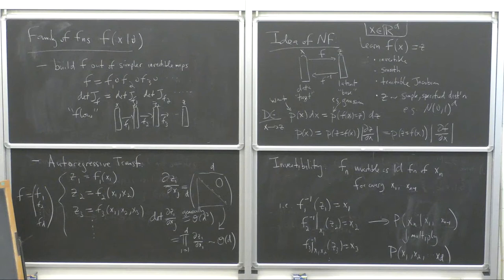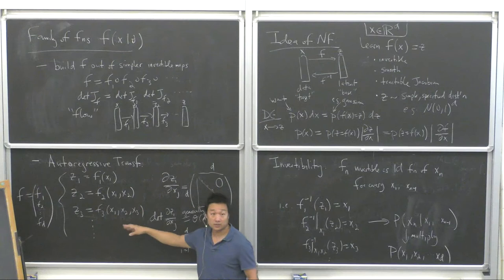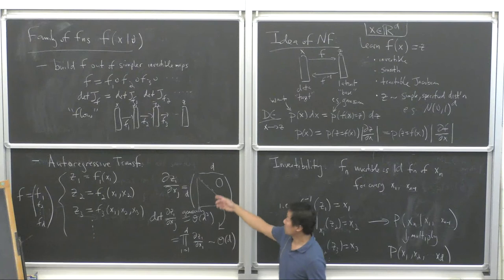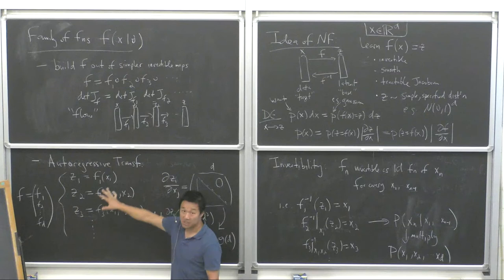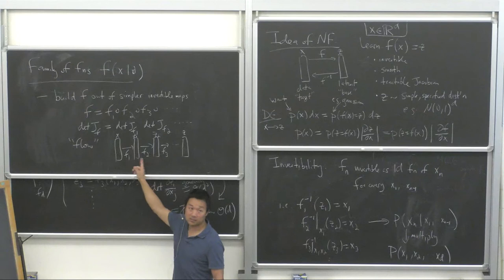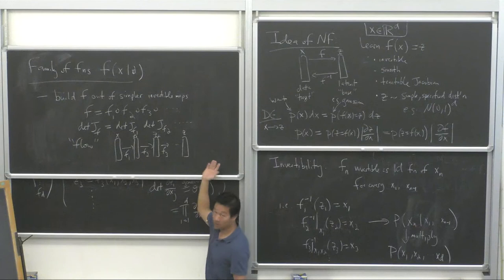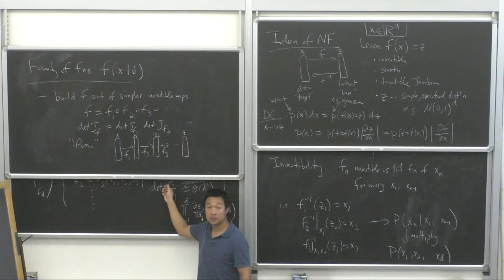This introduces a causal ordering on the X's — is that a problem? Yes, it's not the most general thing you can do. What we do to counteract this: since you can chain together simpler flows, you think of this as one block. After each block, you permute the Z's — shuffle the components — so the next block sees a different ordering, and by the time you've chained many blocks, things are pretty well mixed up.